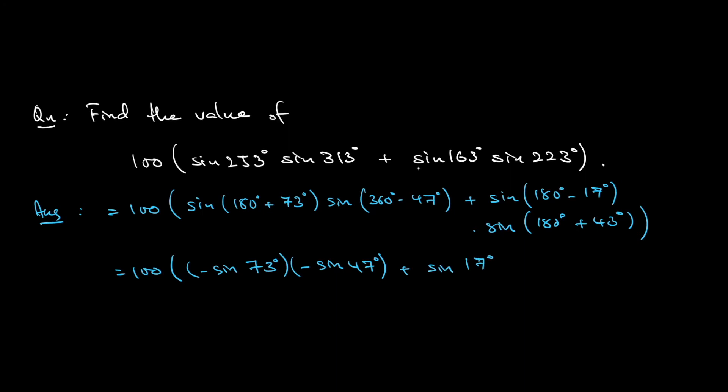Plus 180 minus 17 degrees, sine of that is maintained at sine 17 degrees. Sine 180 plus 43 degrees would be negative sine 43 degrees.